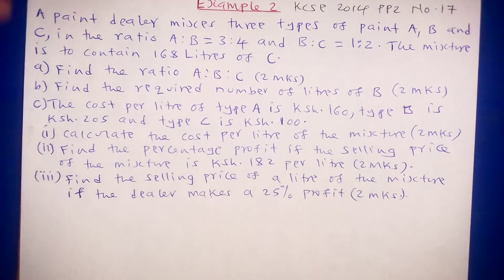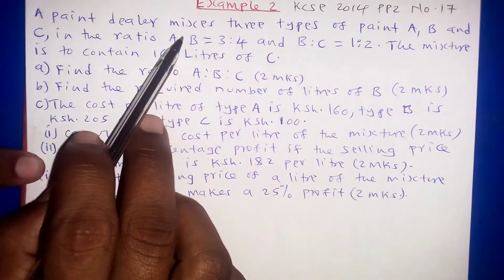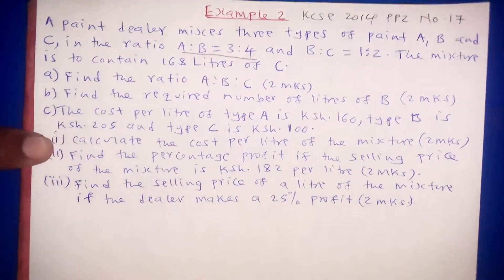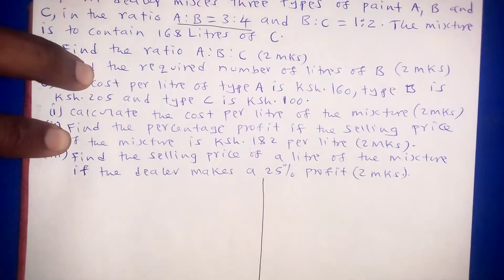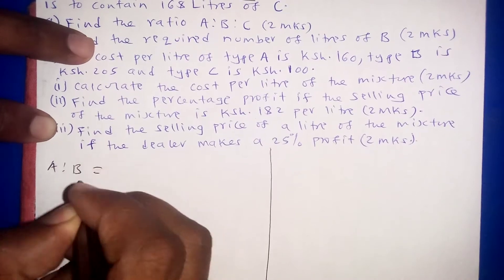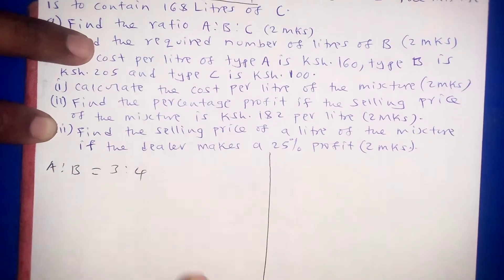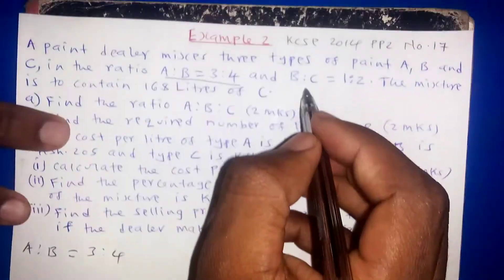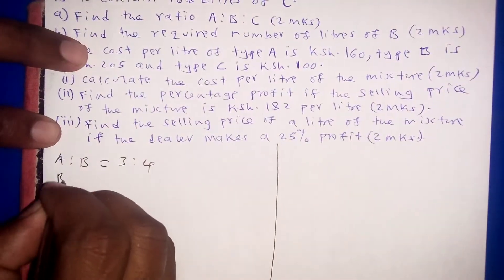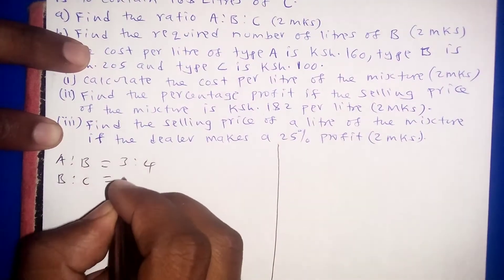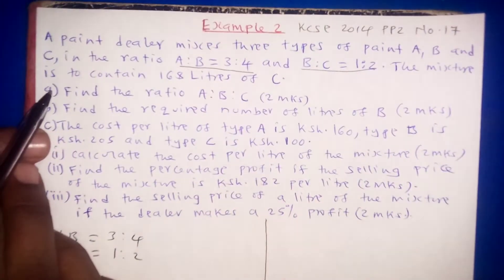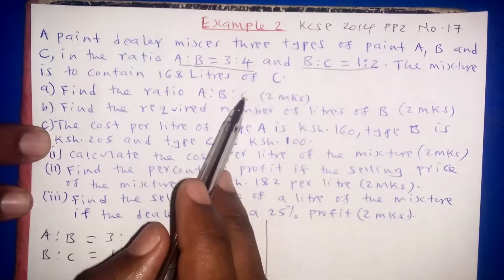To find the ratio, we use the formula learned in Form 1. We are given the ratio of A to B as 3 to 4, and the ratio of B to C as 1 to 2. We are tackling Part A, which asks us to find the ratio of A, B, and C.